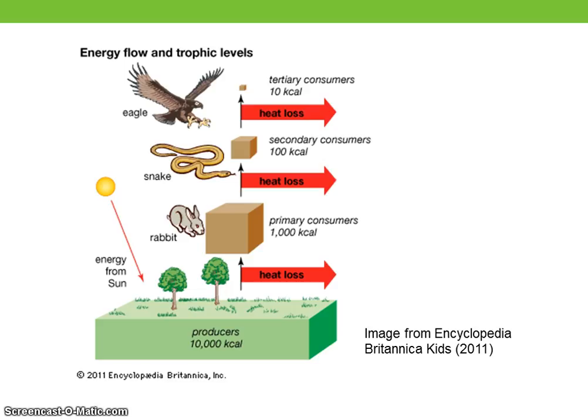Basal species feed on no other species but are fed upon by others. Intermediate species feed on other species and they themselves are prey of other species. Top predators prey on intermediate and basal species.